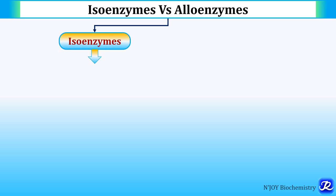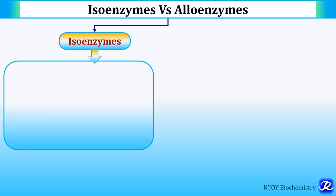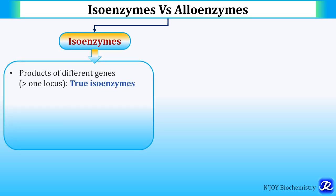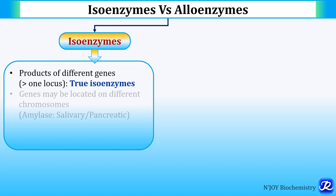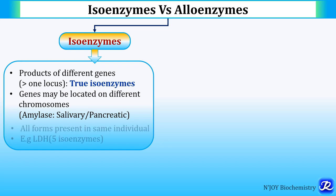Isoenzymes and alloenzymes are different. Isoenzymes are the product of different genes and they are called as true isoenzymes. These genes may be located on different chromosomes — for example, salivary and pancreatic amylase.